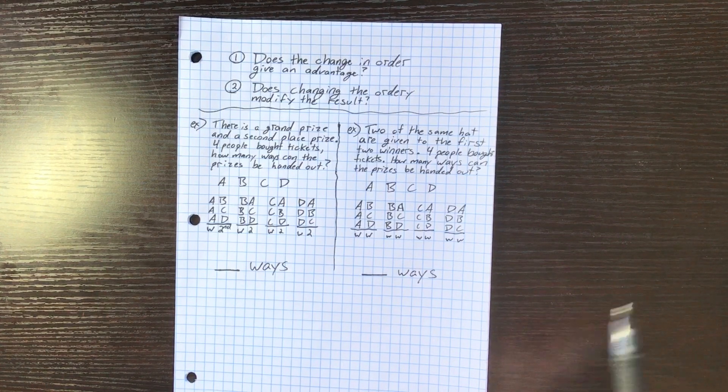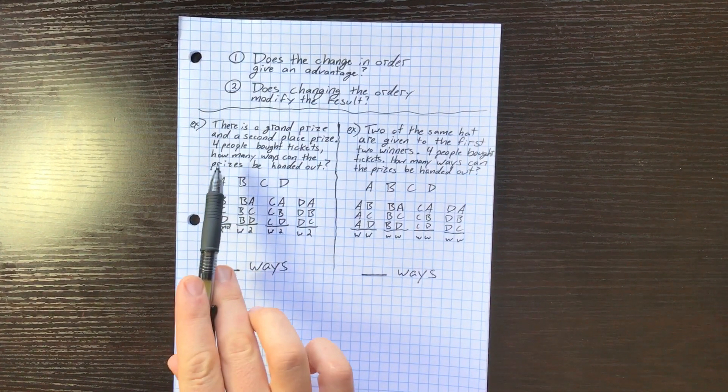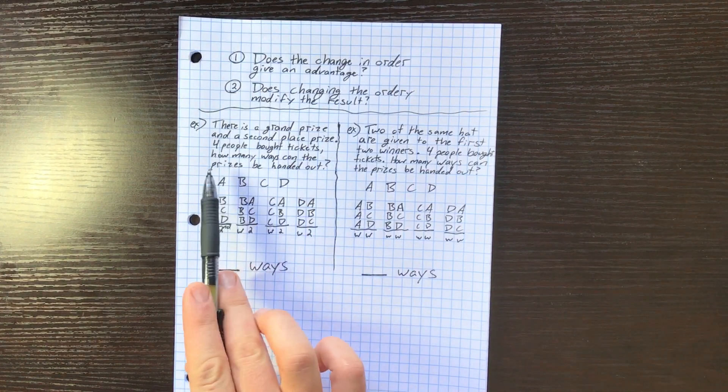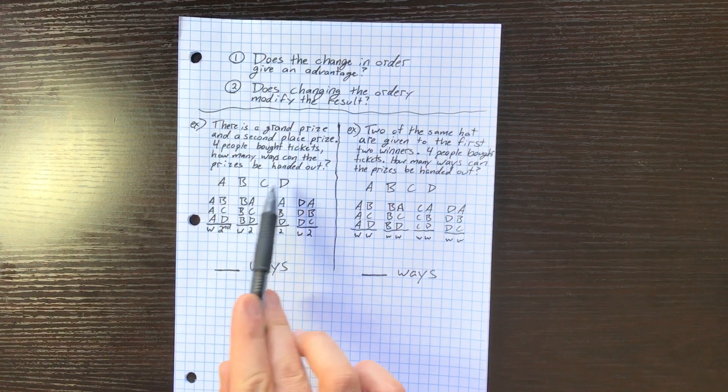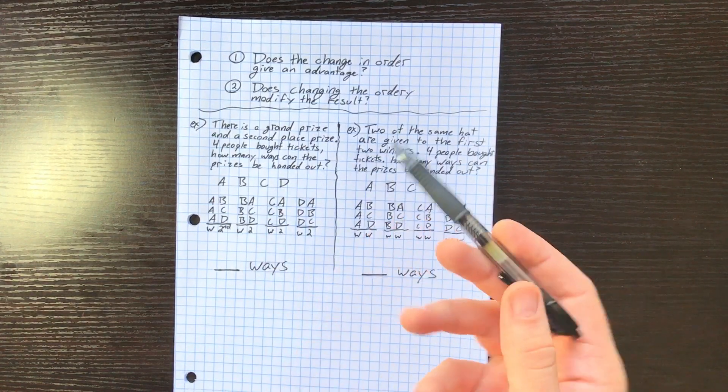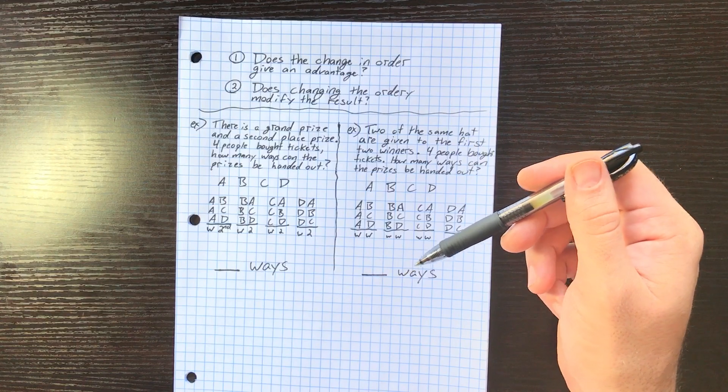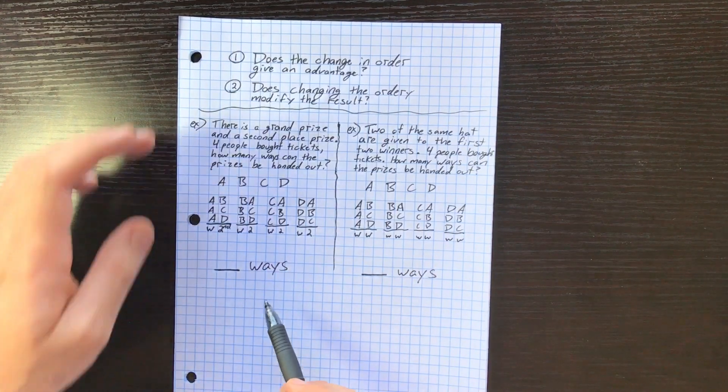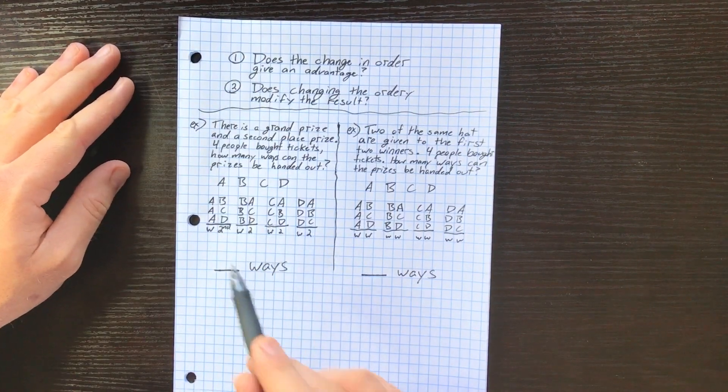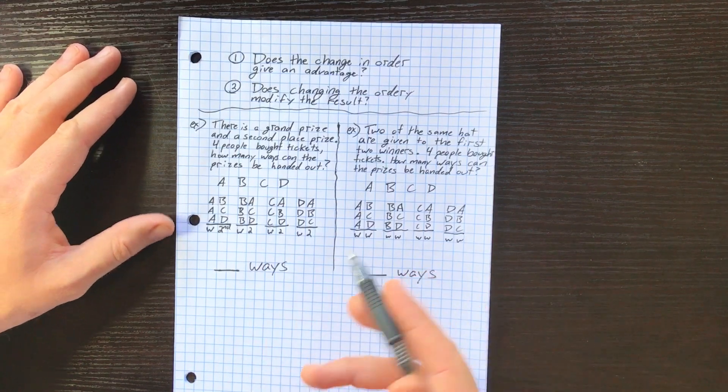So I have two questions here to test how we would treat a permutation compared to a combination. There is a grand prize and a second place prize. Four people bought tickets. How many ways can the prizes be handed out? That's the problem from the previous sheet. I just went ahead and listed them rather than doing that 4 × 3 which we saw.